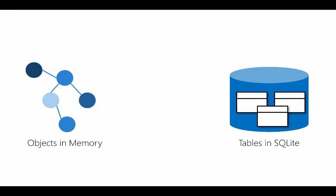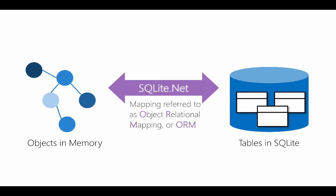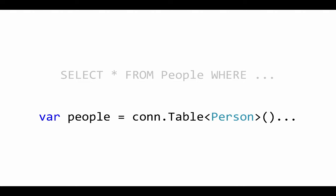SQLite.NET is an ORM, or object relational mapping. ORMs simplify the process of defining database schemas by mapping model objects in your source code to tables in your database. The schema is defined through attributes, which we'll discuss in the next section. ORMs remove the need to write SQL statements and allow us to interact with our data using C# expressions.